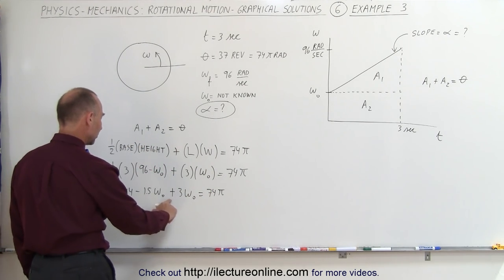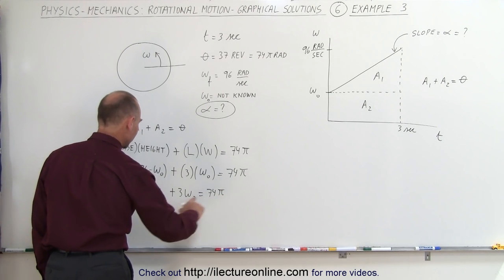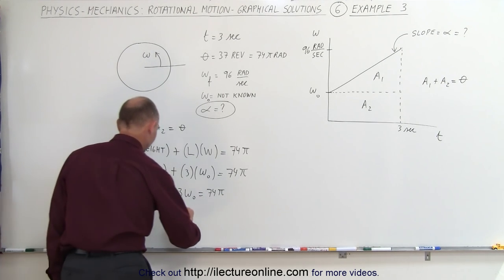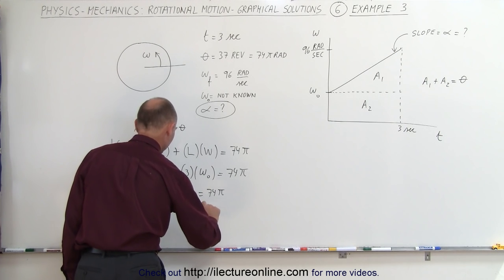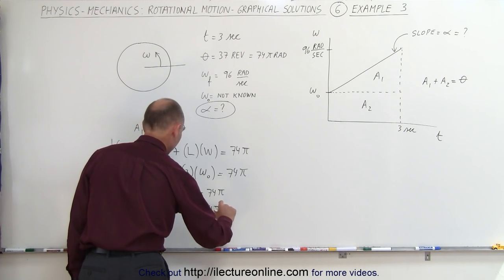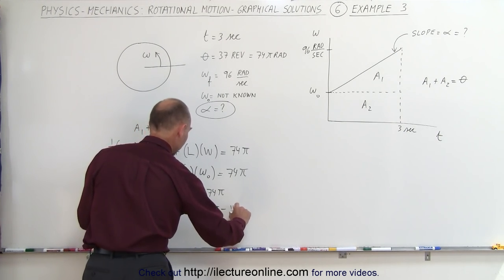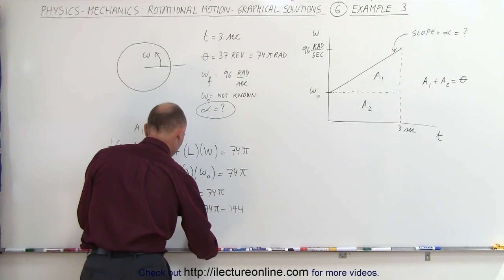Since I'm solving for omega sub naught, I move the 144 over here and subtract this from that. So I get 1.5 omega sub naught is equal to 74π minus 144. So finally, omega sub naught is equal to this.